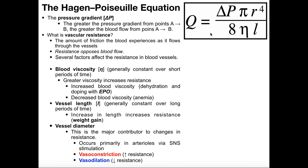The Hagen-Poiseuille equation — the Q here actually means blood flow. In previous videos we may have defined this as cardiac output, but in this context Q is the blood flow. It's equal to the magnitude of the pressure gradient times pi (3.14), times the radius of the vessel to the fourth power, divided by eight, divided by the viscosity — which is the Greek letter eta — and then divided by the vessel length.